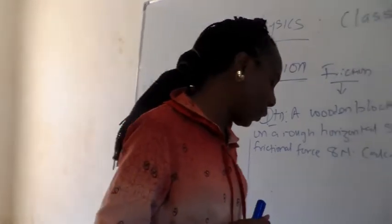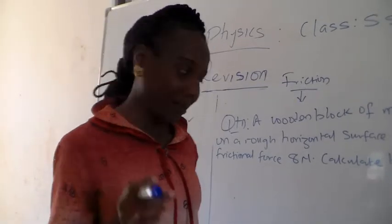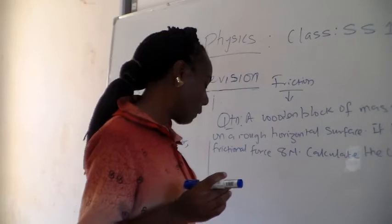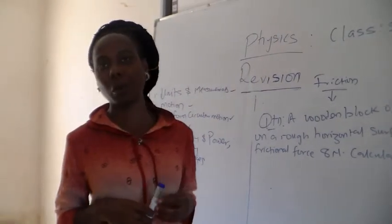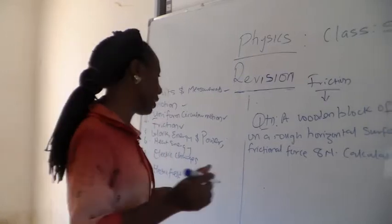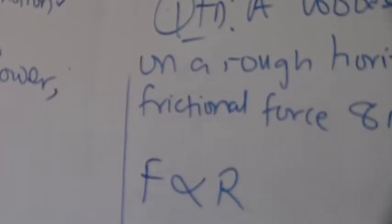Now, we have laws guiding friction. You should be able to state the five laws comfortably. But one of the major laws, which is the last one, states that friction varies directly with the normal reaction force, giving us F varying directly with the normal reaction force.